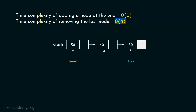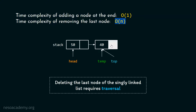To delete the last node of a singly linked list, we need the address of the second-to-last node, but we don't have it. We need traversal — we create a temporary pointer and traverse the list towards the right until we reach the second last node, then delete the last node and update the link. Deleting the last node of a singly linked list requires O(n) time due to traversal. That's why we are not preferring adding and removing the last node of the linked list.